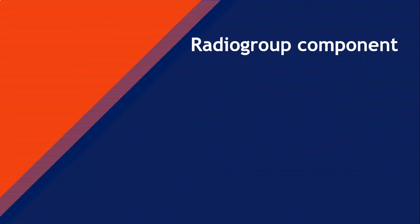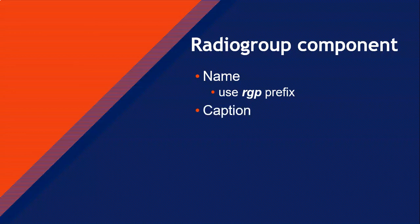What are the properties of a T radio group? First, there's the name. You must name all your components just like you would name an edit control — you'd put a prefix like EDT in front. For a radio group, let's use RGP so we know we're dealing with a radio group. Then there's the caption property, which is the text displayed at the top of the radio group — a little label or heading displayed to the user.